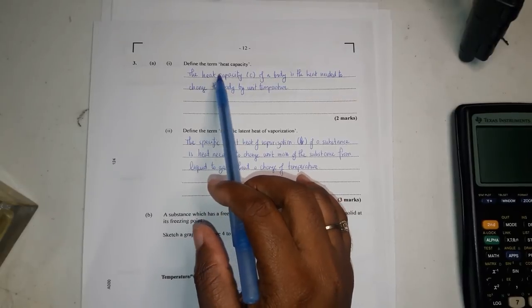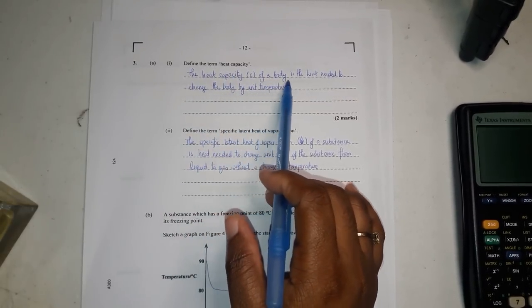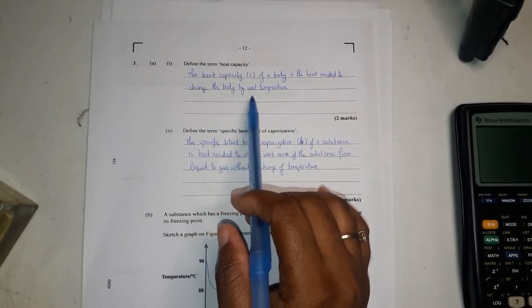The first question is define the term specific heat capacity. The specific heat capacity of a body is the heat needed to change the body by unit temperature.